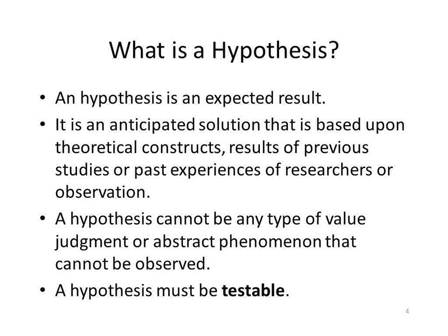So what is a hypothesis? A hypothesis is one of the major goals you have to accomplish at the end of your review of literature. It's an expected result — you have to be able to guess, based on your research of theoretical and empirical literature, what you think is going to happen. It's an anticipated solution based on theoretical constructs, results of previous research, or past experiences of researchers or observations. It cannot be any value judgment or abstract phenomenon. It has to be testable — I have to be able to do steps A and B in my method section to get an answer for my testable hypothesis.